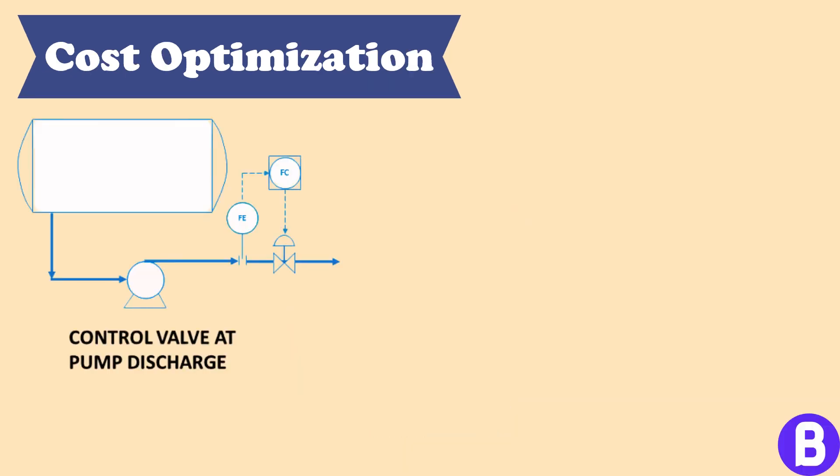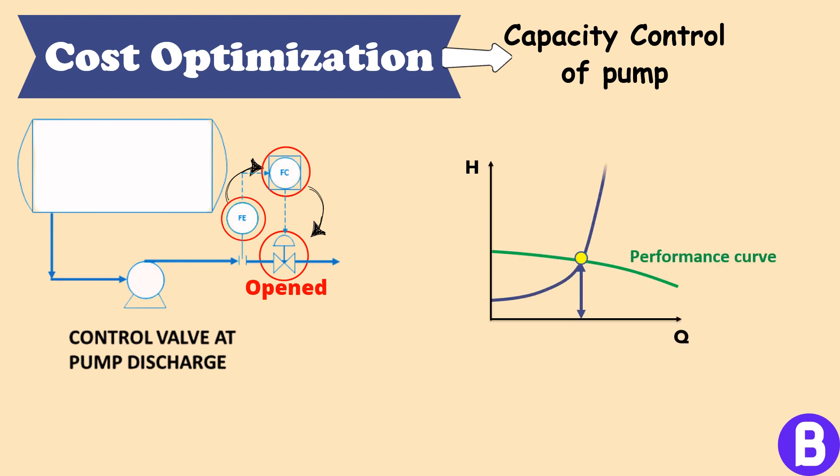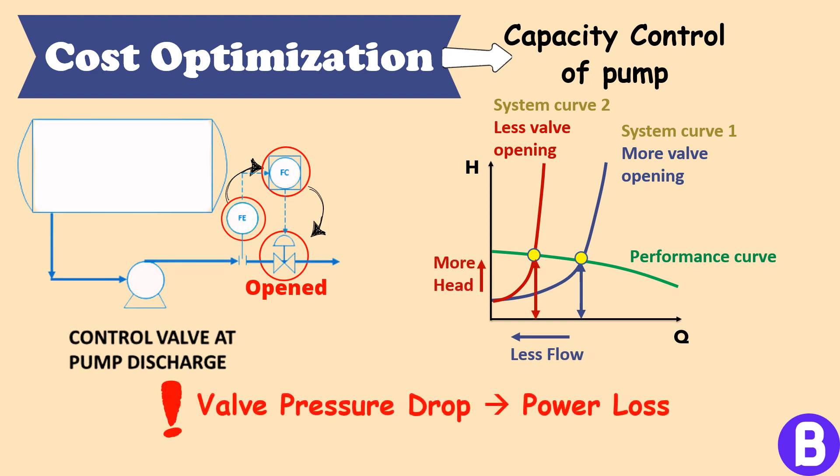The choice of the control scheme can also help optimize cost. A famous example of cost optimization can be the capacity control of a pump. The most common method is that we have a flow element that sends a reading to the flow controller. The flow controller sends a signal to adjust the opening of the control valve on the pump discharge. Change in the control valve opening shall shift the system curve, which means a new operating point on the pump performance curve. However, this method consumes much power, especially for large pumps.